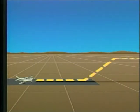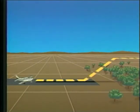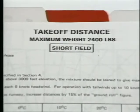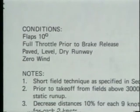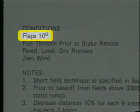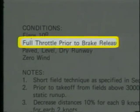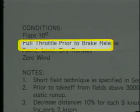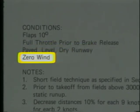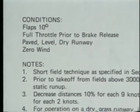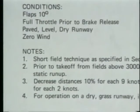Suppose you're going to be departing a short field and you want to know the ground roll and total distance required to clear a 50-foot obstacle. For this type of calculation, you'll need to refer to the takeoff distance chart. Before beginning, note the conditions necessary to achieve the computed values: the flap setting, the power setting prior to brake release, the runway conditions, the associated winds, and notes for adjusting to varying wind and runway conditions.